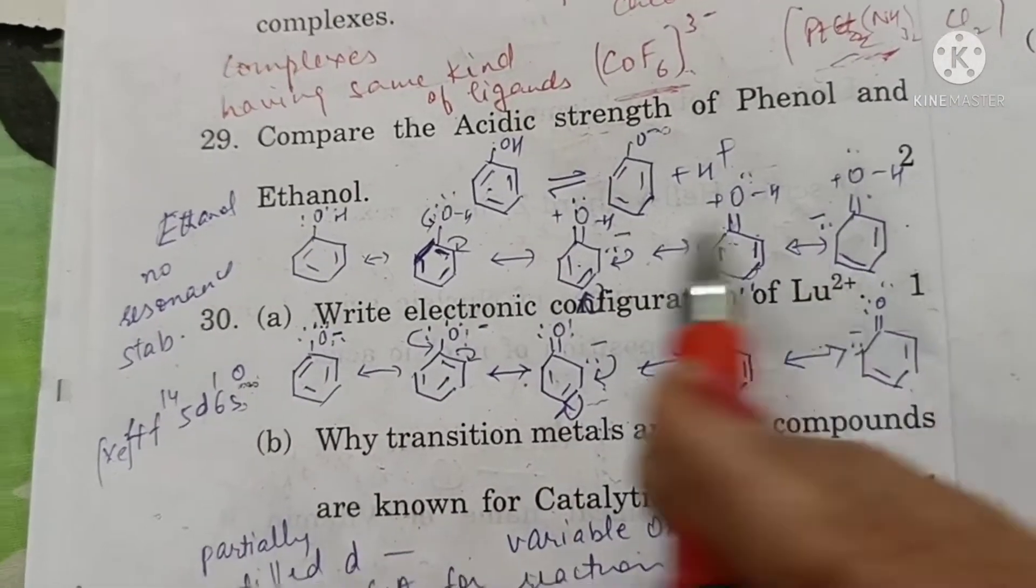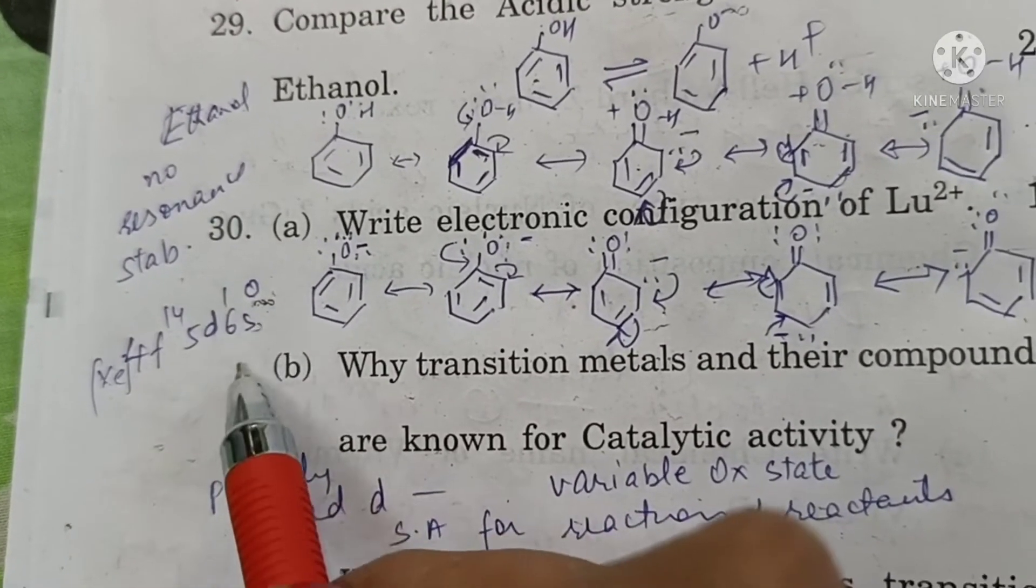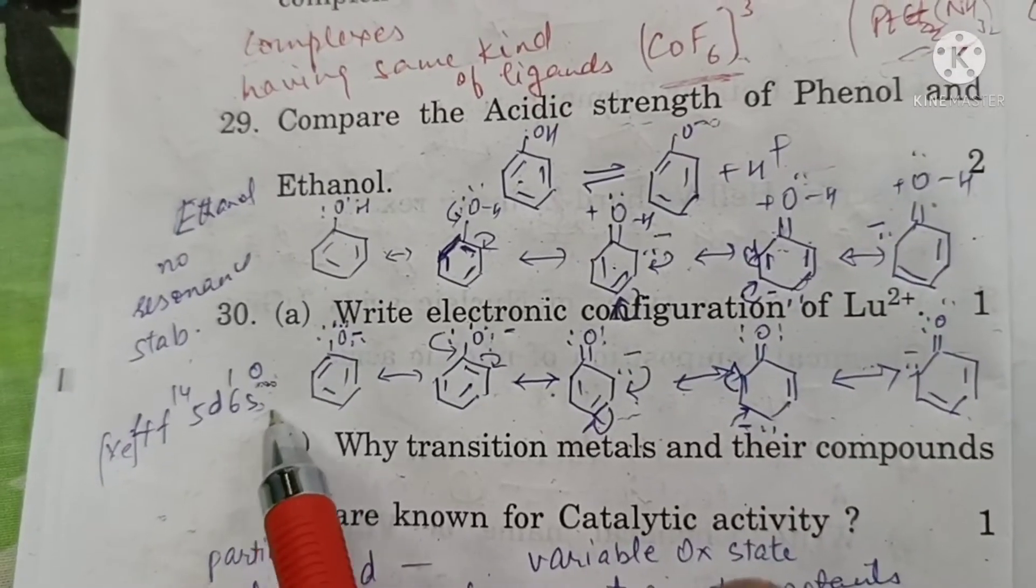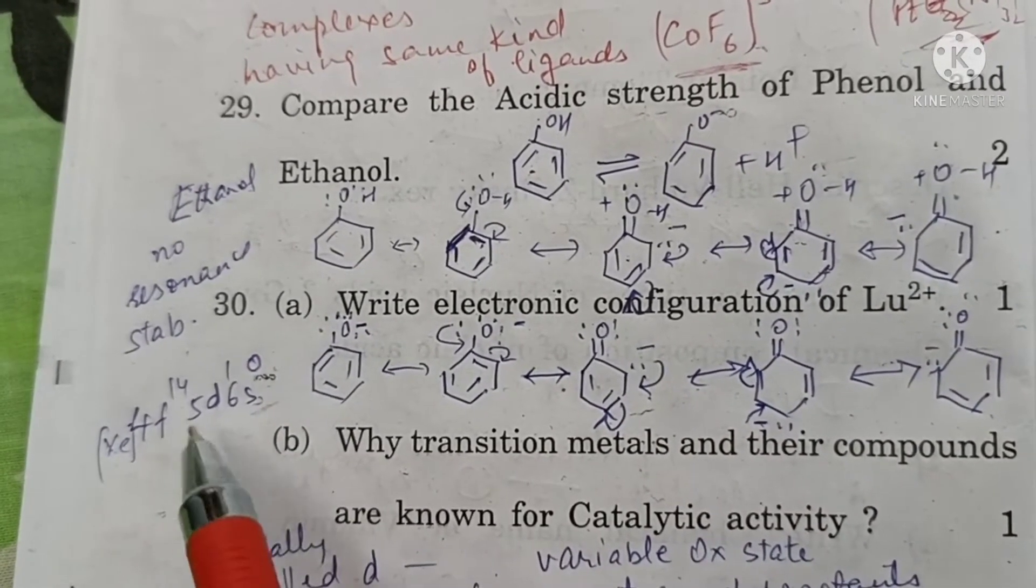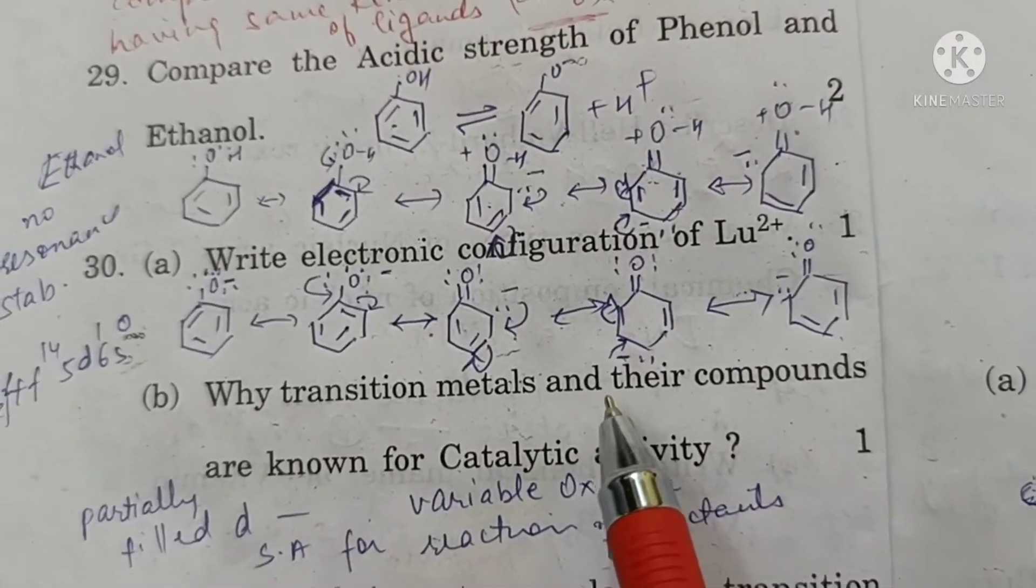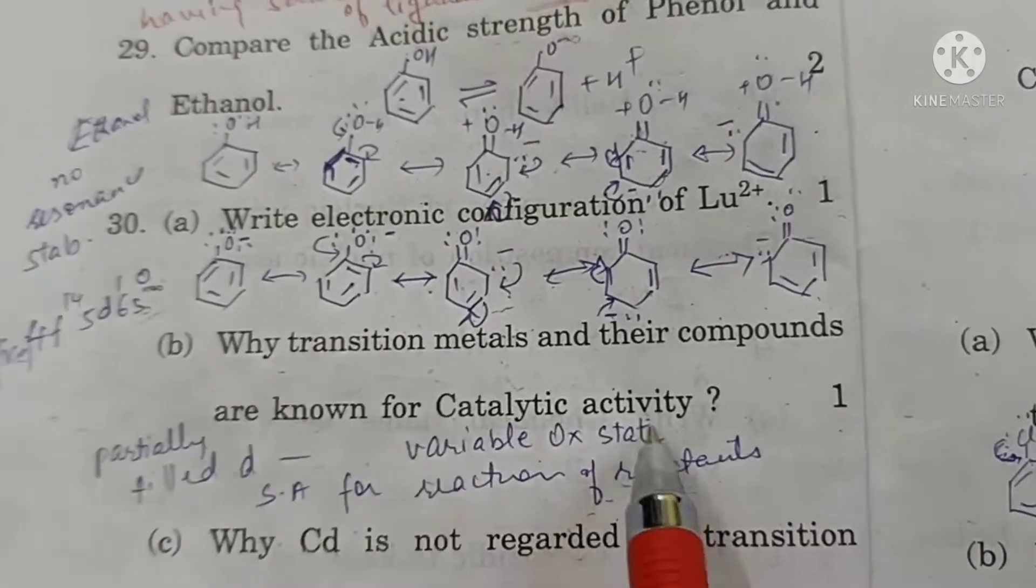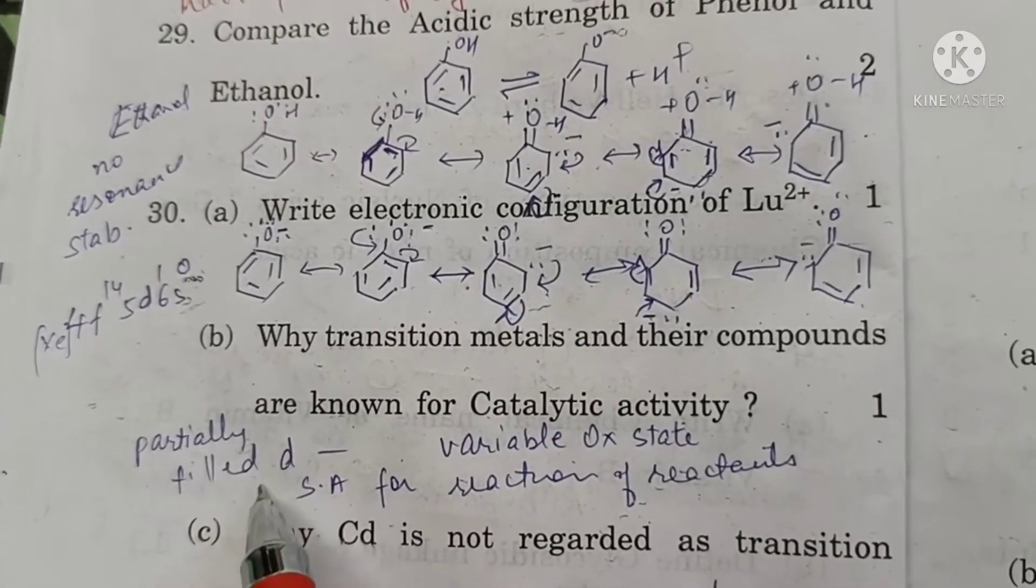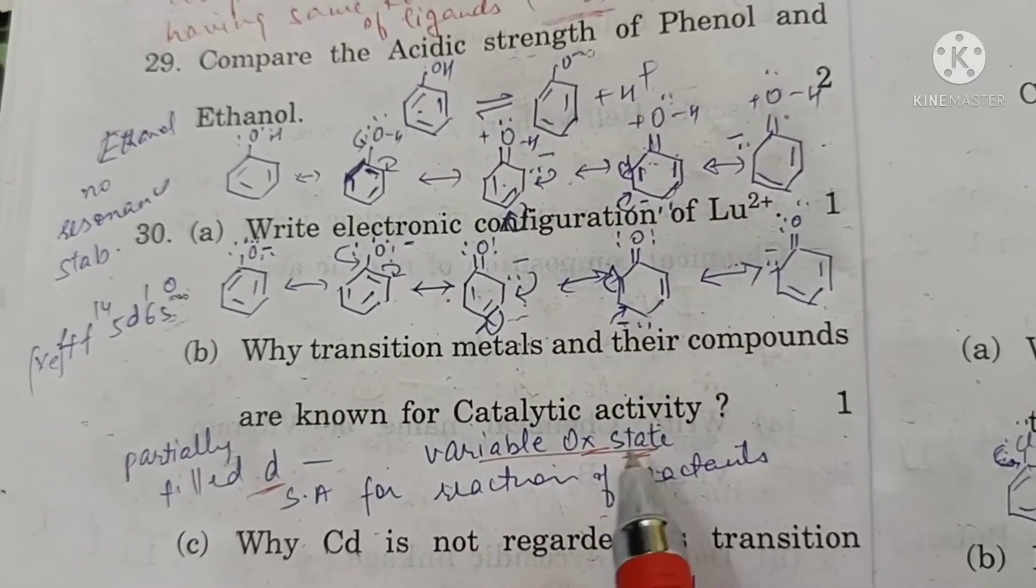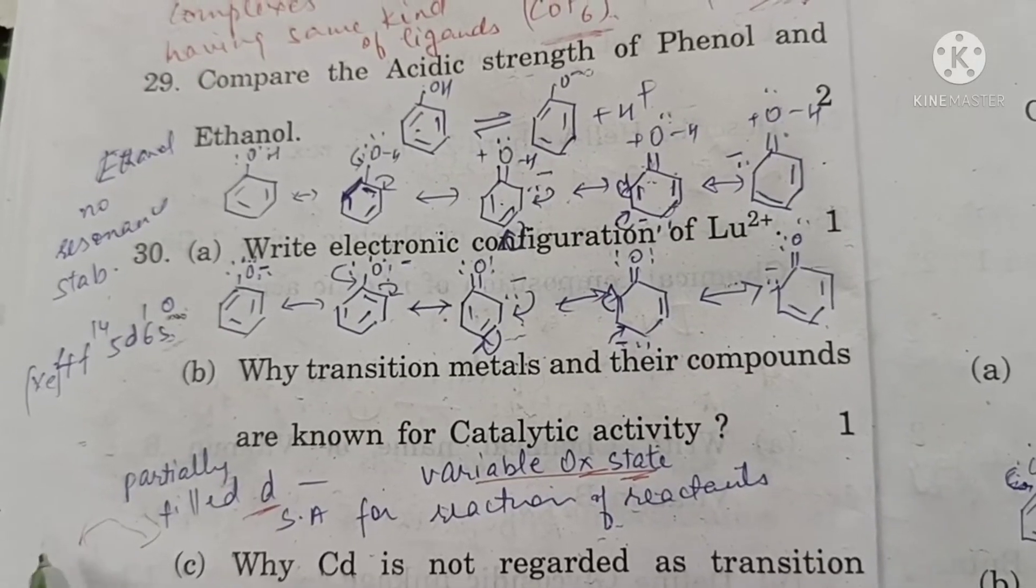Electronic configuration of lutetium is xenon 4f14, 5d1 and 6s2. On losing 2 electrons, 6s0 and xenon 4f14, 5d1 remains. Why transition metals and their compounds are known for catalytic activity? Because they contain partially filled d electrons. So they can show variable oxidation state. They can change from one oxidation state to another thereby acting as a catalyst.